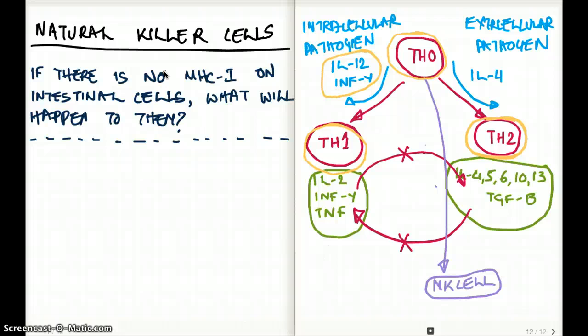Now, what about natural killer cells? Natural killer cells are also stimulated by the same interleukins as our T helper 1 cells, which is IL-12 and interferon gamma. So IL-12, interferon gamma, this also stimulates our natural killer cells.